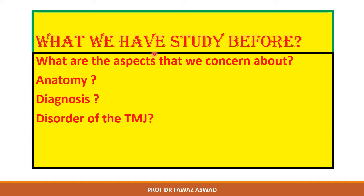The TMJ is a unique but bilateral joint that functions as one unit. We studied the anatomical structures including the capsule and articulating disc. The capsule is considered to be a dense fibrous membrane that surrounds the joint and encapsulates the articulating eminence. We also covered the synovial fluid of the synovial joint.